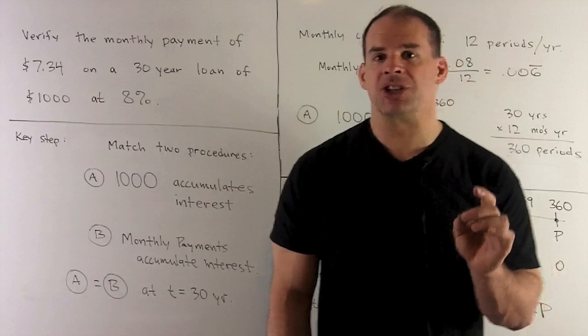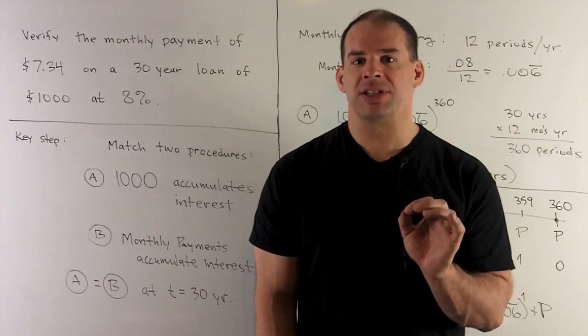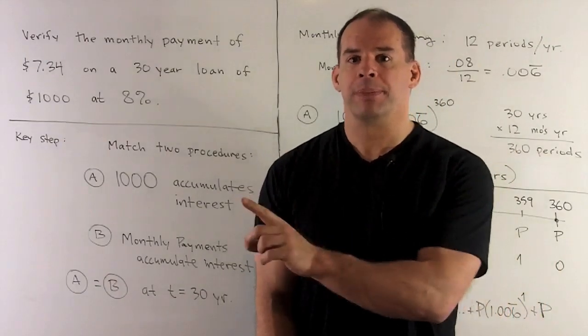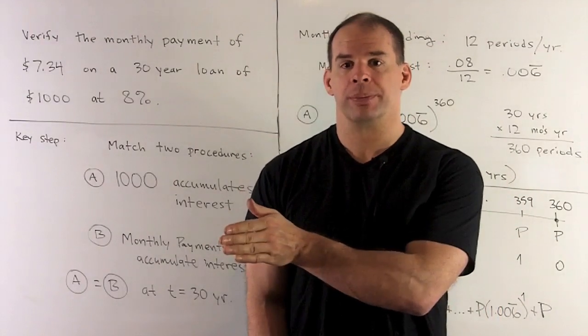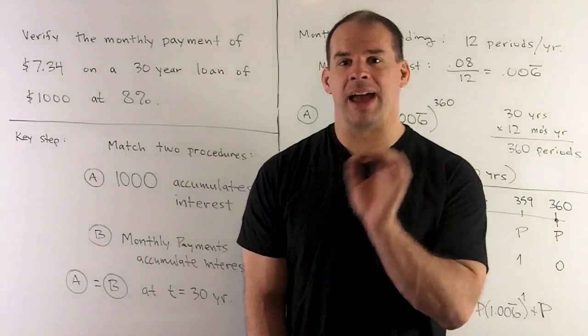For the second cash stream, we're going to take our payments, invest them every month, and then let them accumulate interest at 8% for 30 years. So we'll be putting a payment in every month.